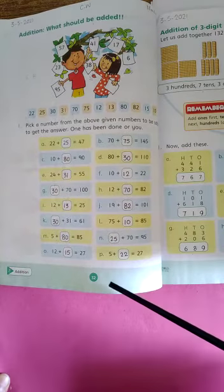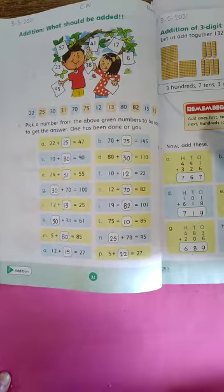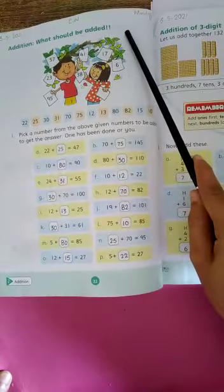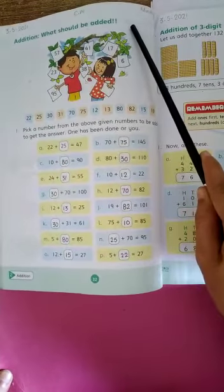take out your countdown. Page number 32. Write date and day on your countdown with your sharp pencils. Okay friends.